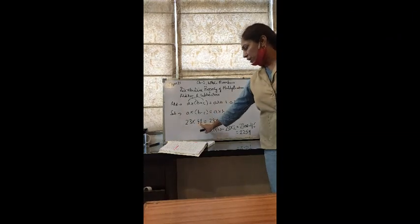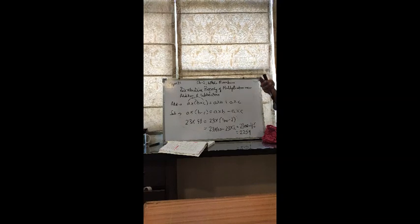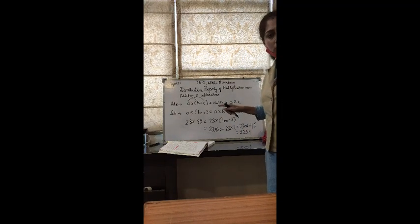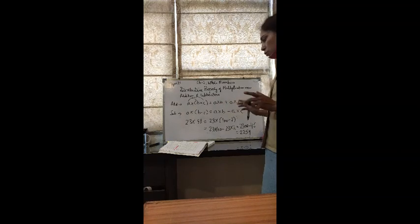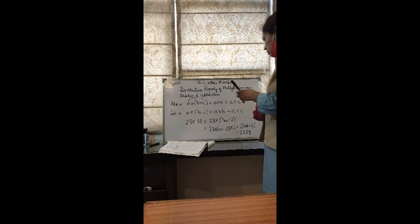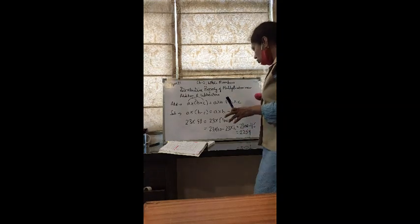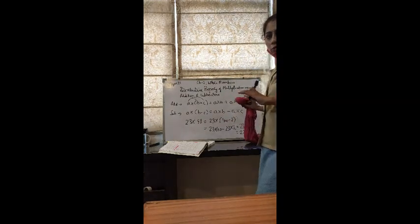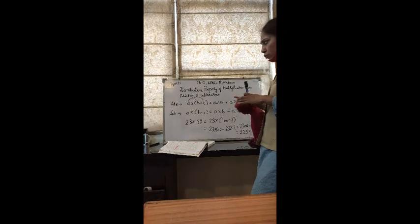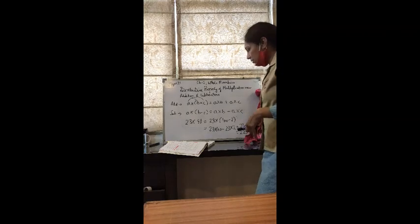2300 minus 46 gives the answer 2254. You can also check the answer by verifying the units. So these are the two forms of the distributive property under whole numbers. Now I will do 4 practice questions with you for a better understanding. This is a very important property — whenever you have a complex calculation, go for the distributive property to make your calculation easier and get accurate answers.